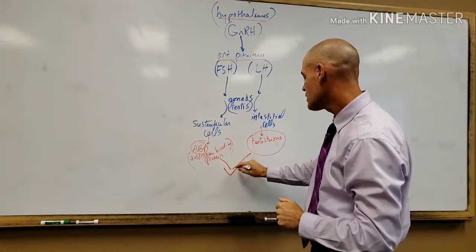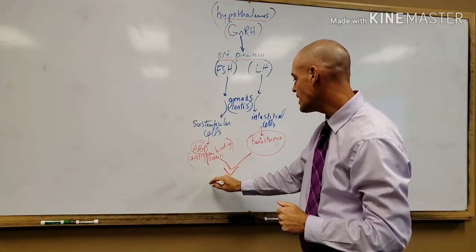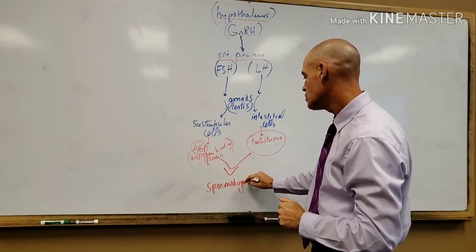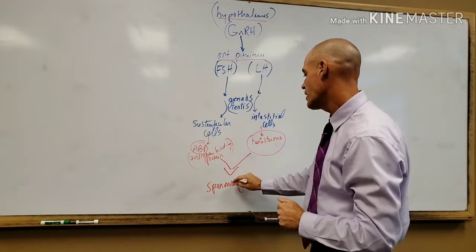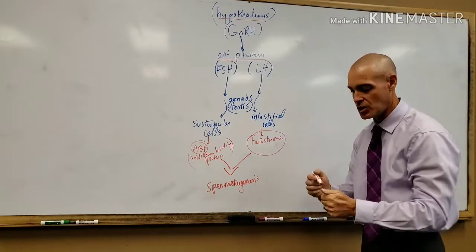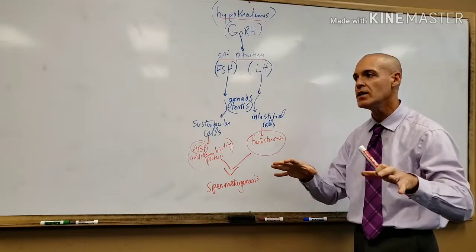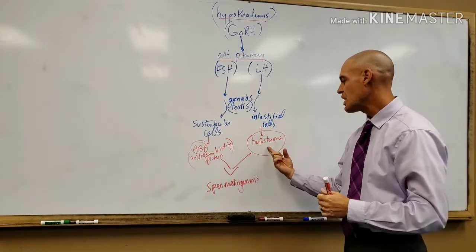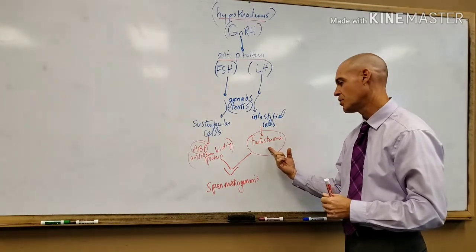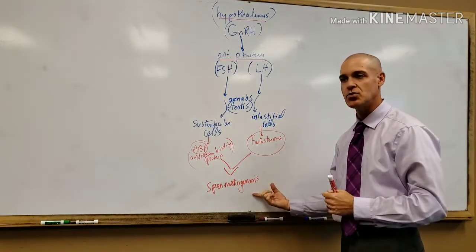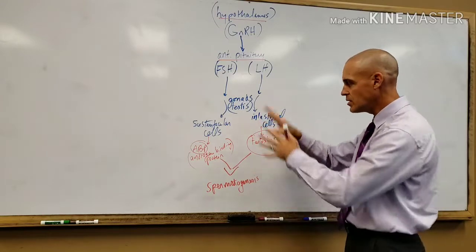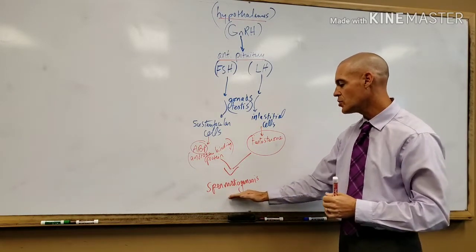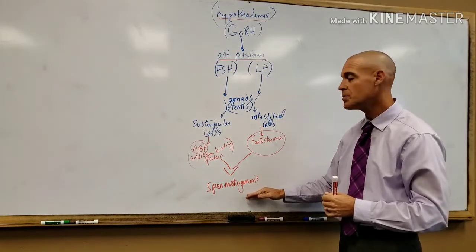We've got these two specialized cells in the testes: one making testosterone, one making ABP. Together they're going to stimulate spermatogenesis, which is the production of sperm. To trigger sperm production we need androgen binding protein and we need testosterone. Spermatogenesis occurs in the seminiferous tubules of the testes.